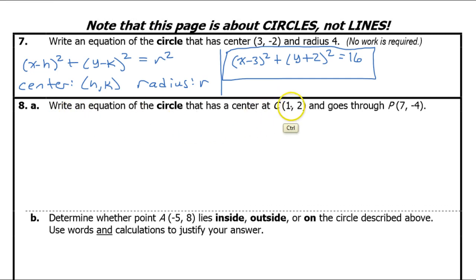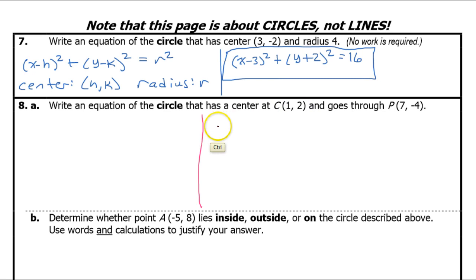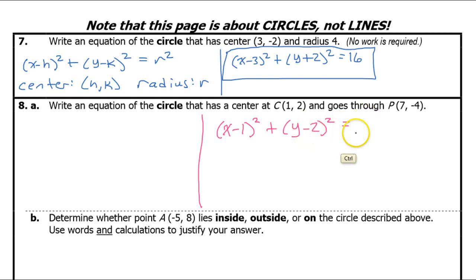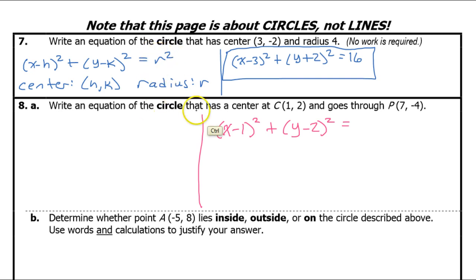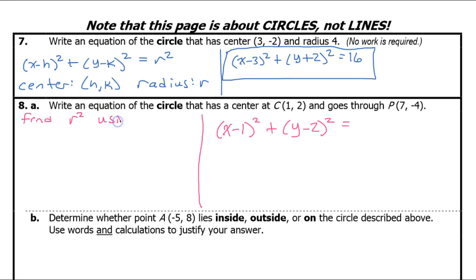Now let's write the equation of a circle that has this center and passes through this point. We have the center, so I can start the equation right now: x minus 1 squared plus y minus 2 squared equals... I can get all of that from the center. All I need is the final number, which comes from the radius squared. I need to find the radius squared, and I'm going to do that using the point on the circle they gave us.